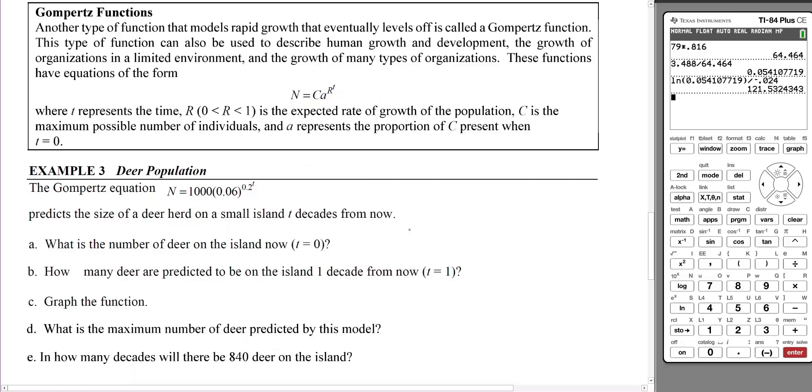T represents the time. R is between 0 and 1 and is the expected rate of growth of the population. C is the maximum possible number of individuals, and A represents the proportion of C present when T = 0.